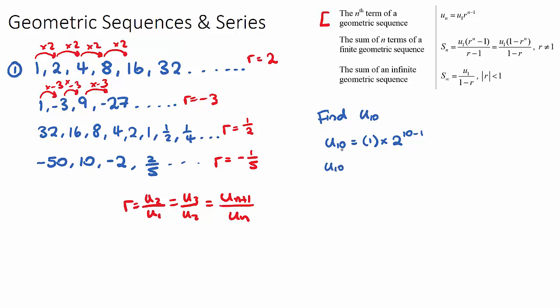So U₁₀ will be 1 times 2 to the 9, which we know will just be 2 to the power of 9. We can work that out if we have a calculator, or if your multiplication skills are on point. We know it's going to be 1, 2, 4, 8, 16, 32, 64, 128, 256, and I think we're going to get 512. So 512 will be the 10th term in this sequence here.